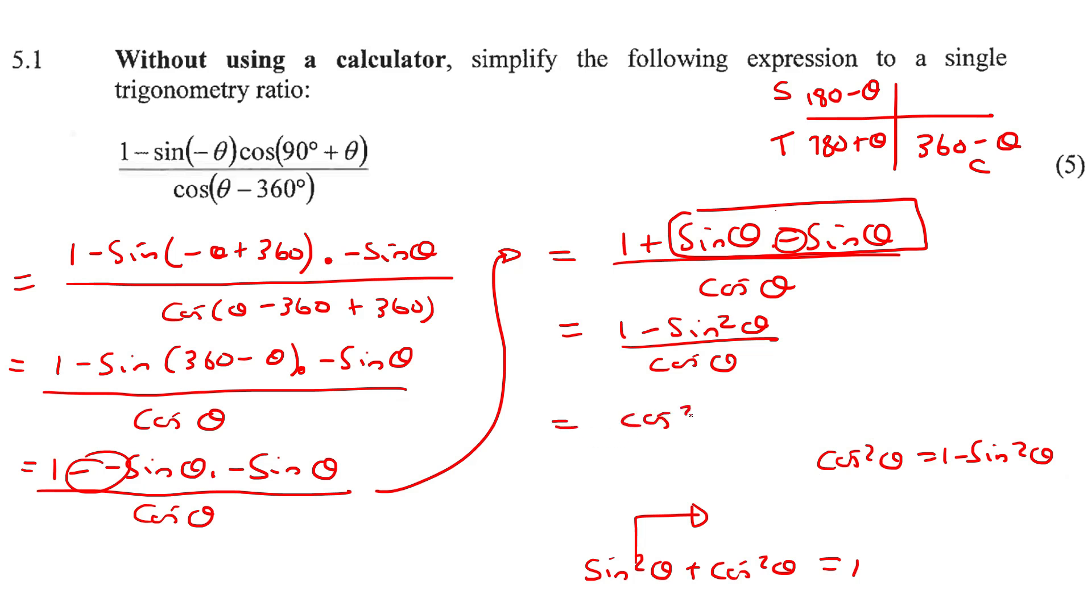So at the top, we can just change it to cos squared theta. And at the bottom, we have cos theta. Then cos squared theta is the same as cos theta times cos theta, if you want to think of it like that. So you could cancel out one of them and then you'd be left with cos theta.